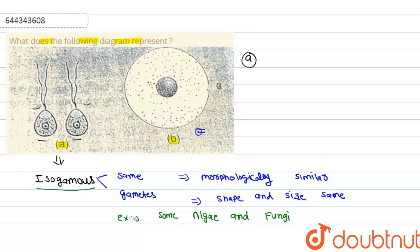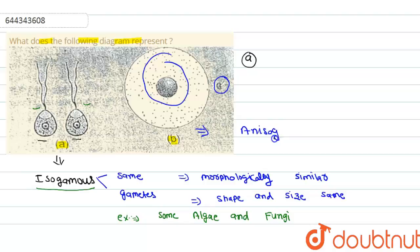Now let's talk about the second diagram, B. In diagram B, we can see the first gamete and the second gamete. This condition is called anisogamy. Anisogamy means that both the gametes are morphologically dissimilar.